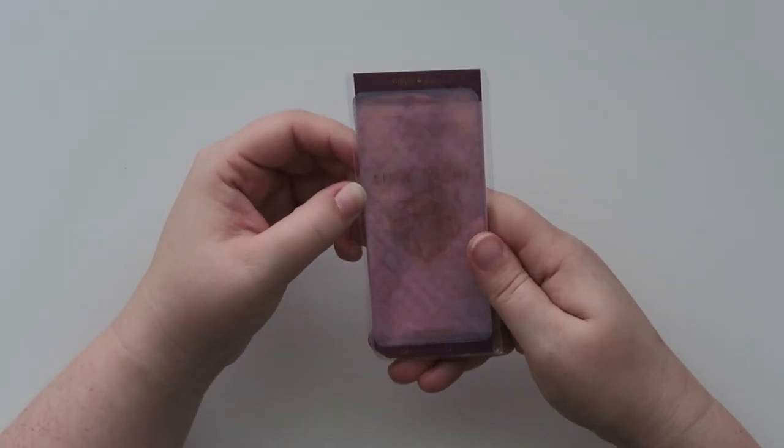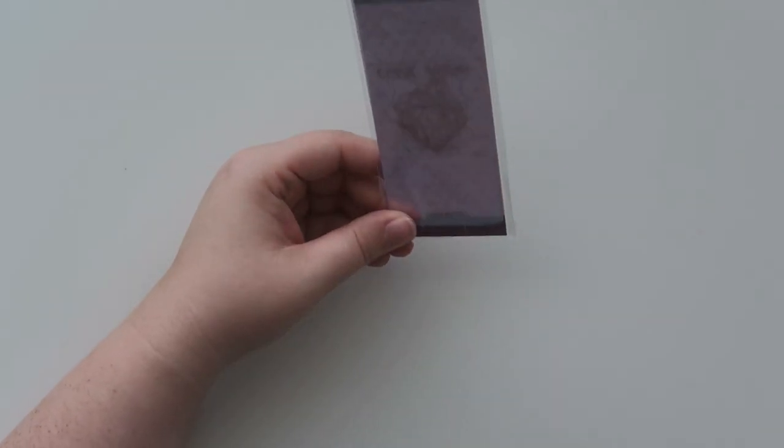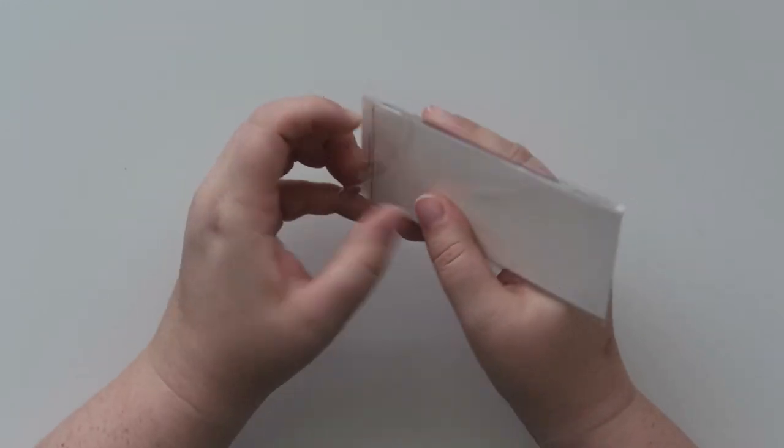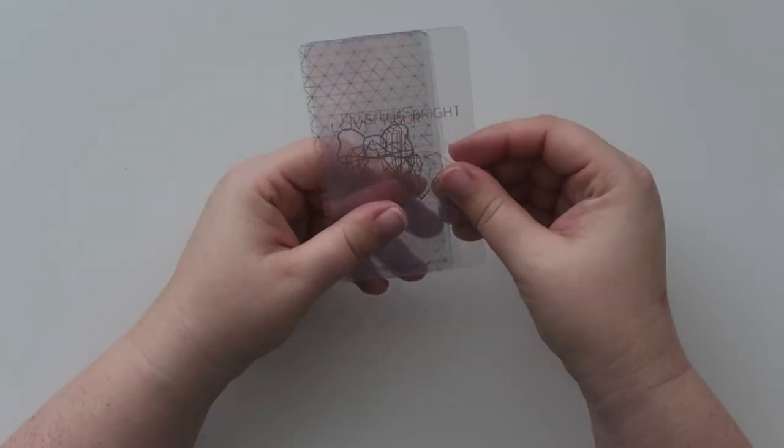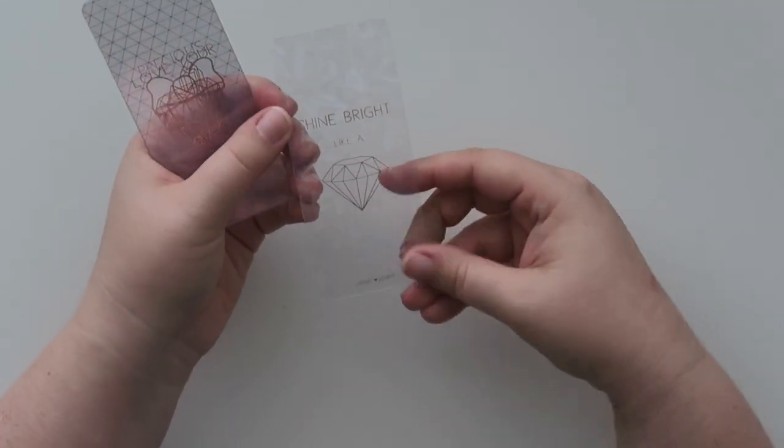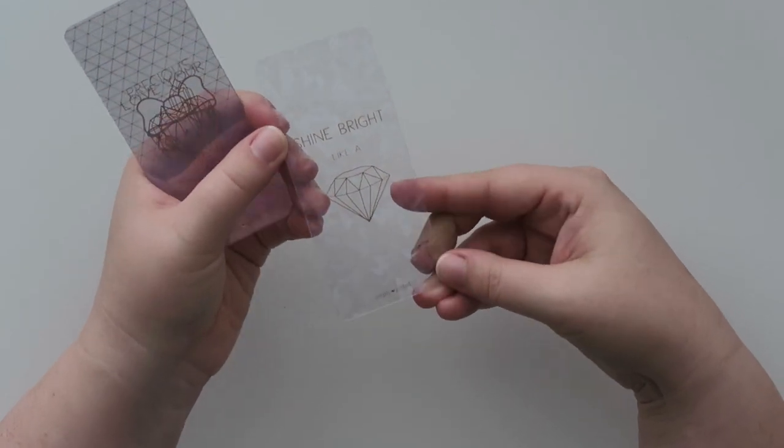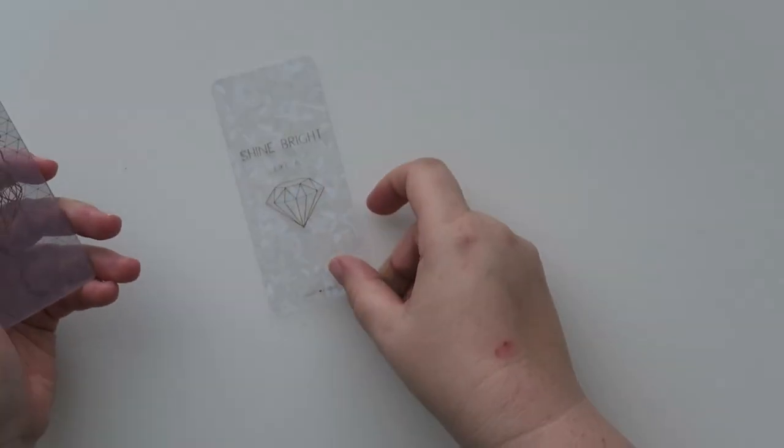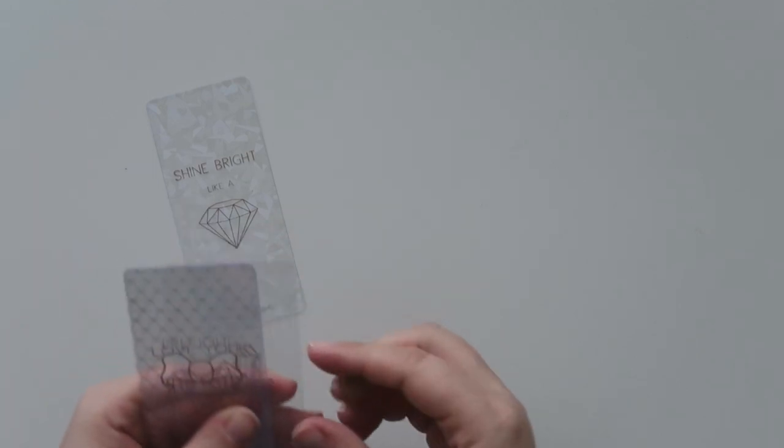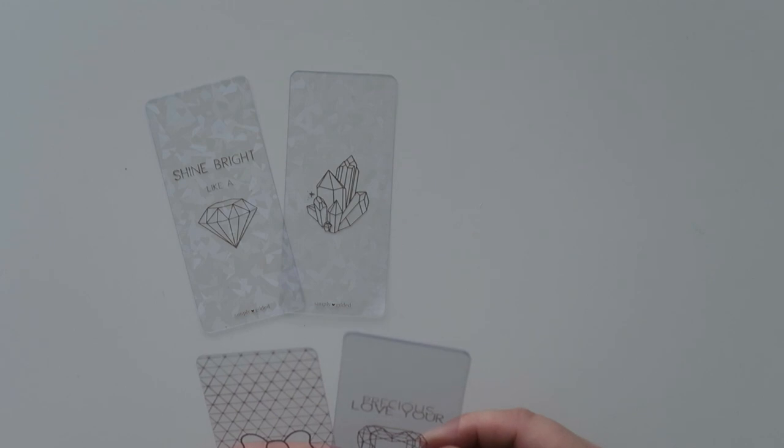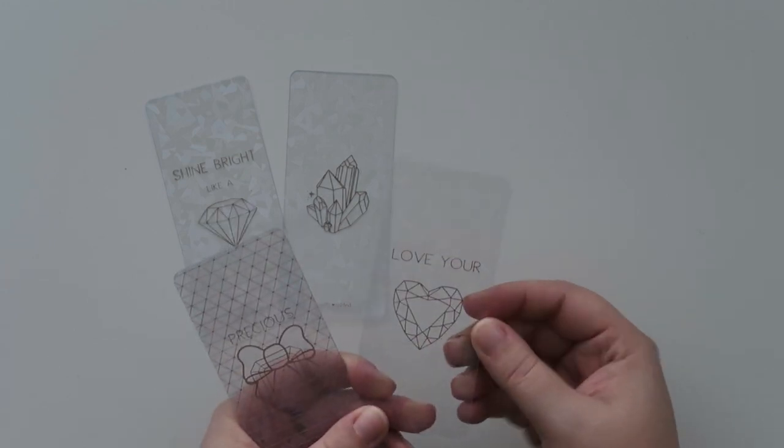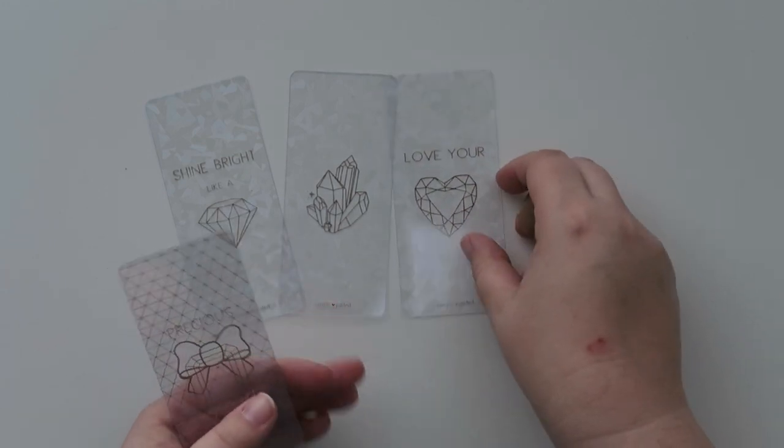And then we've got the set of washi cards. That's what it is. I can't talk today. It's been a long day. I just got home from work. All right. So here are all of the washi cards. This one is a really pretty foil. This one says shine bright like a diamond. This one is just like a little cluster of gems.